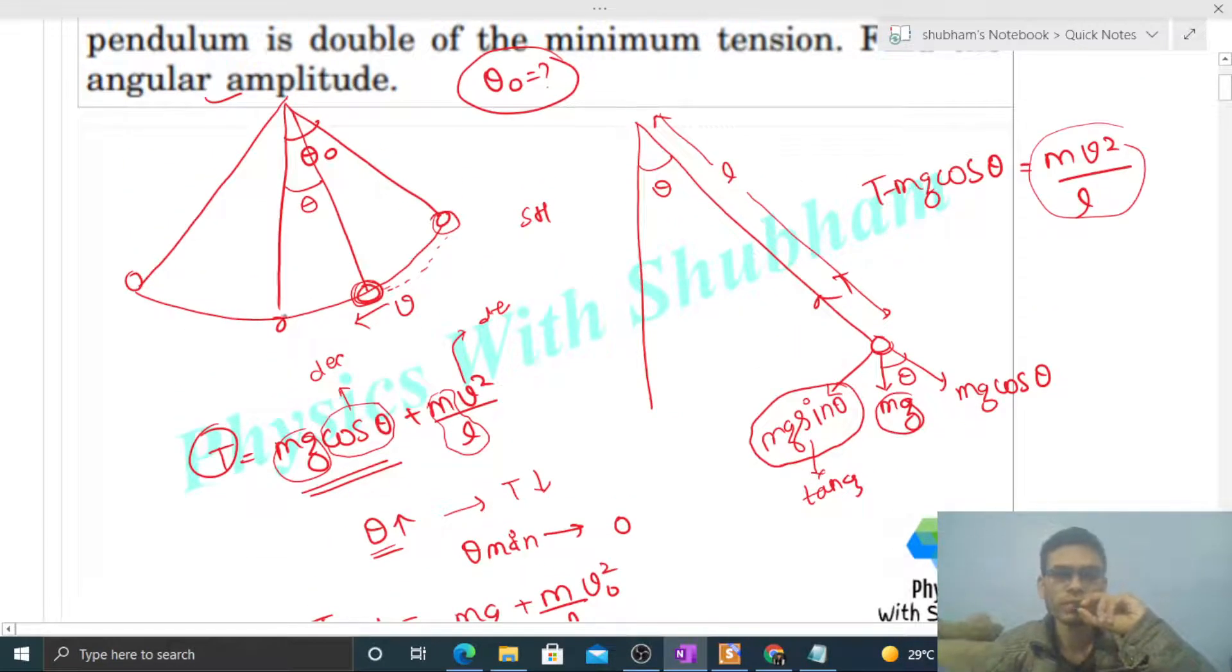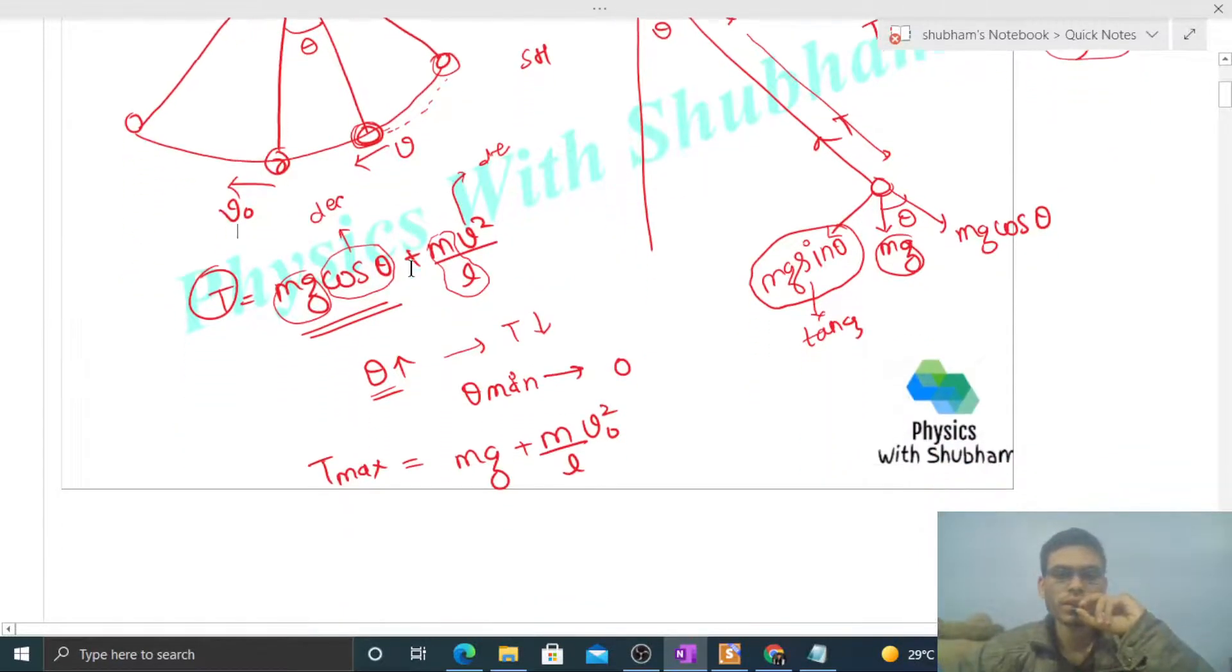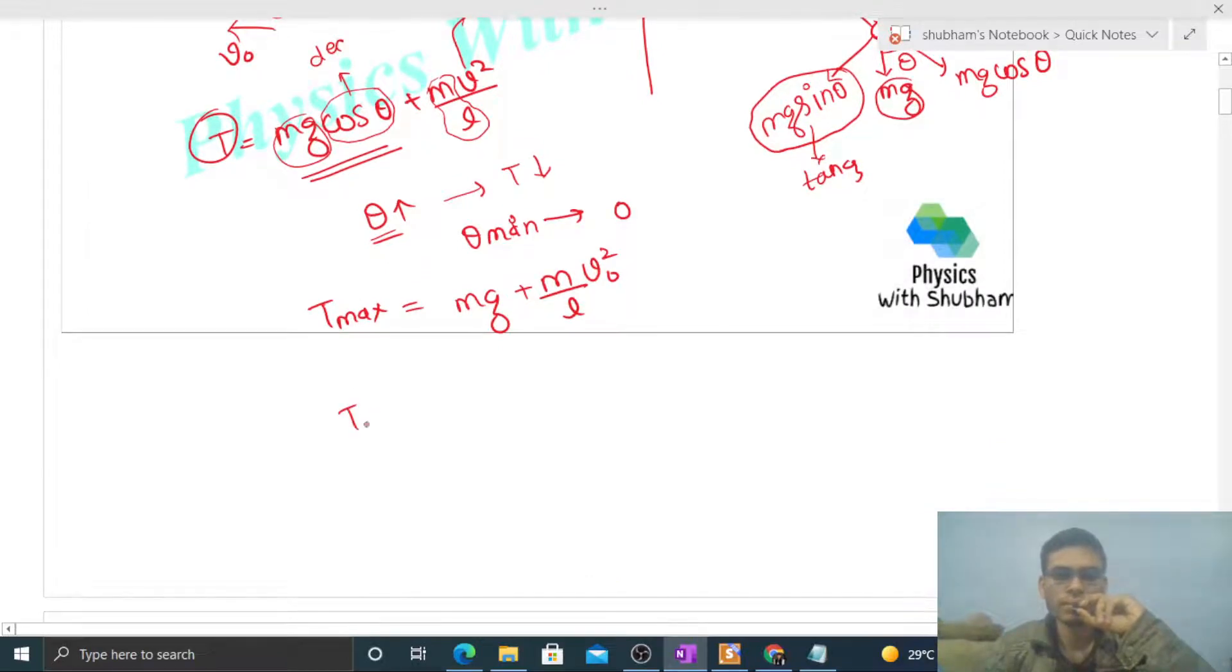And minimum tension will be for maximum value of theta. Maximum value of theta is the amplitude theta naught. So minimum tension will be mg cos theta naught plus m by L into speed at the extreme position. At extreme position, speed will be zero, so this term becomes zero.